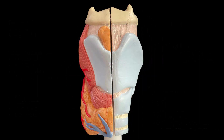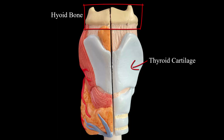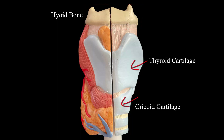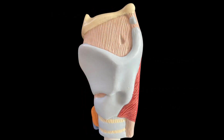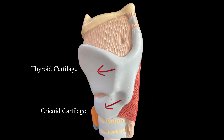Now taking a look at the larynx, we have the hyoid bone at the top, the thyroid cartilage, and below that is going to be the cricoid cartilage. The membrane in between is the cricothyroid ligament. Looking at it from a lateral view, again we have the thyroid cartilage, the cricoid cartilage, and the cricothyroid ligament.